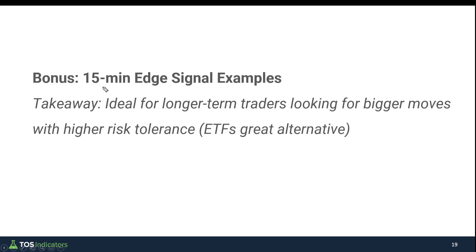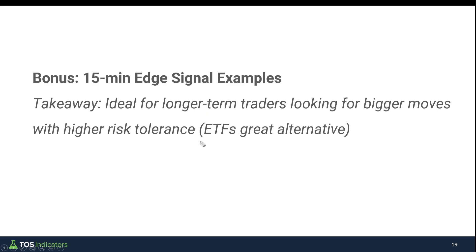The takeaway for the 15-minute edge signal setup is that it's ideal for longer-term traders looking for much bigger moves, but that also means you need a much higher risk tolerance. For those trying to mitigate that additional risk, ETFs offer a great alternative along with micro-futures contracts. For some of you the micro-futures may still be large for these setups, where you can use things like SPY, DIA, QQQ, or even options on those markets — including zero or one-to-two days to expiration contracts — which allows you to reduce the cost involved.